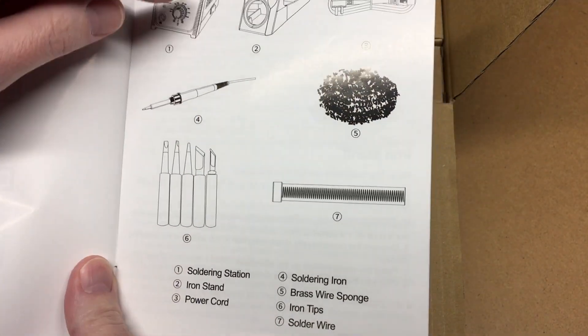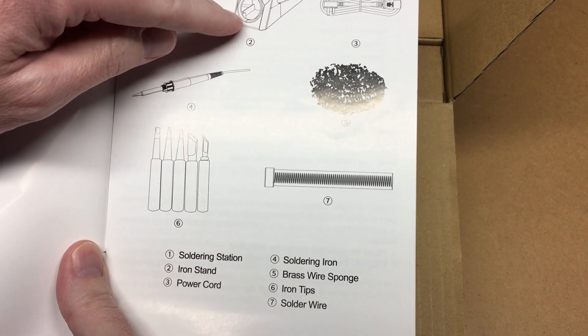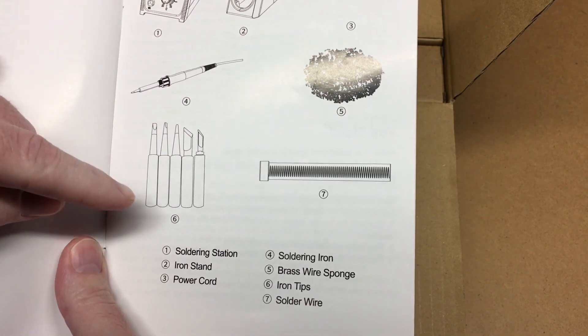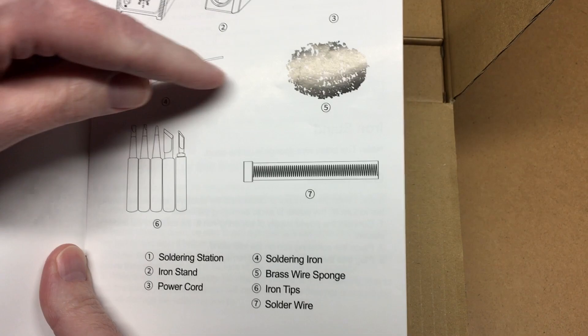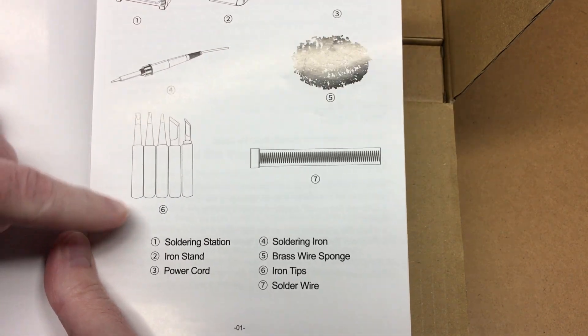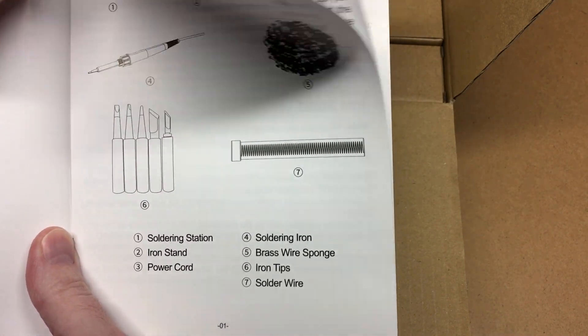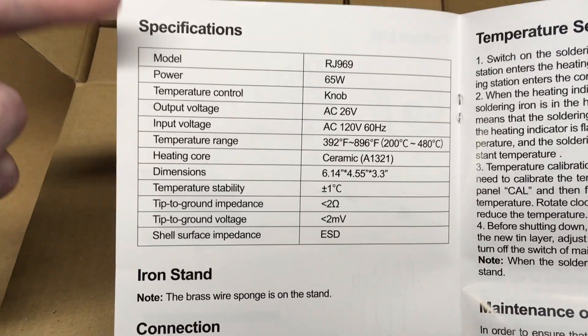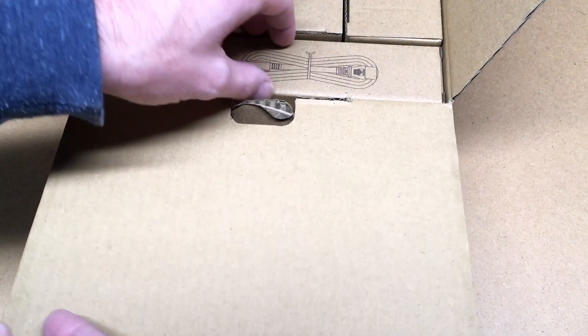The package list includes a soldering station, iron stand, power cord, soldering iron, brass wire sponge, soldering tips, and solder wire. Here are all the specs - I went over a lot of these already. Okay, let's check this out.